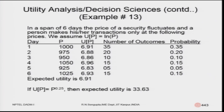The total number of outcomes is 100. The corresponding probabilities in the last column are: 0.35 for utility 6.91, 0.2 for 6.8, 0.1 for 6.86, 0.15 for 6.96, and 0.05 for 6.93. The probabilities sum to one. The expected value is computed by multiplying each utility value by its corresponding probability.